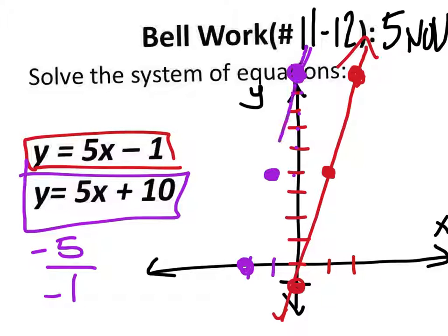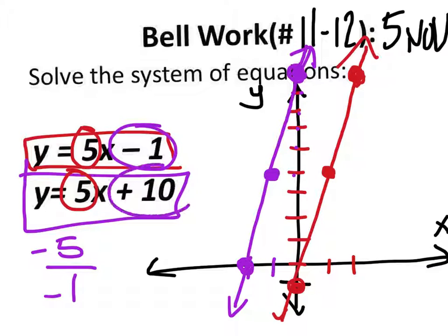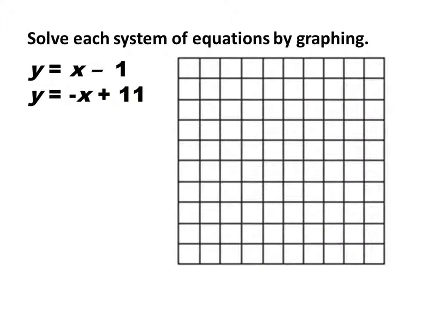What do you notice about these two lines? Parallel. Did I need to graph these? No, you don't. All I need to do is look at the slopes. The slopes are the same, so there's either an infinite solution or no solution. We just have to look at the y-intercepts. Since they're different, there's no solution.